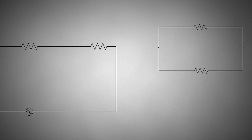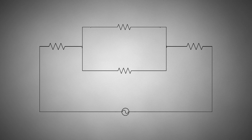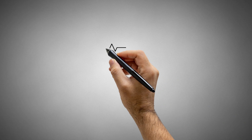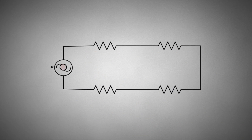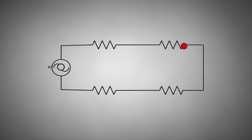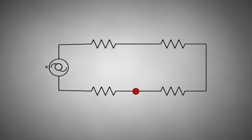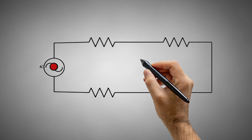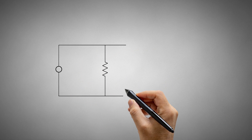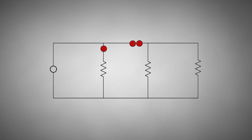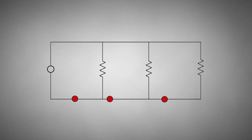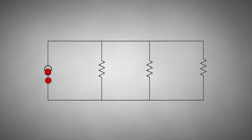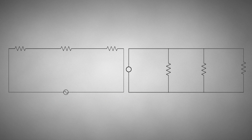Combination circuits are made up of series and parallel circuits. This is an example of a series circuit — there is only one path for current to flow. This is an example of a parallel circuit, since there is more than one path for current to flow. Series and parallel circuits have different rules; let's carefully review them.